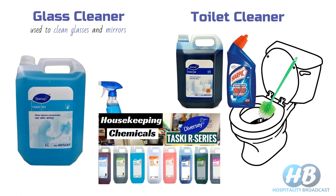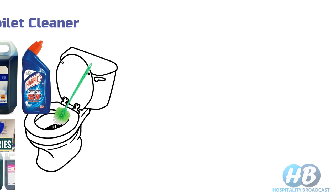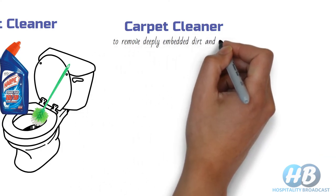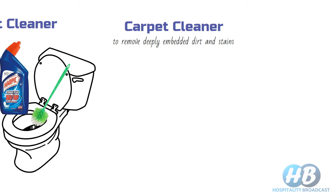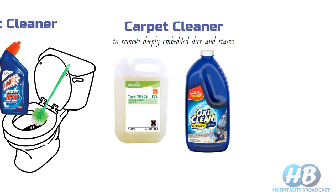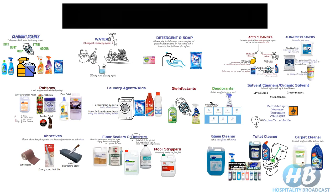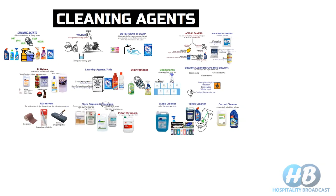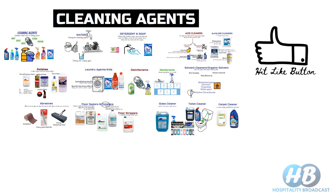For more detail on Taski R series chemicals, check the link in the description below. Finally, we have carpet cleaners, which are designed to remove deeply embedded dirt and stains in carpets. You will find different types of carpet shampoo in the market. That's all about housekeeping cleaning agents. I hope you liked this video — if you did, hit the like button, comment below for any doubts or suggestions, and don't forget to subscribe. Thank you for watching and stay tuned.